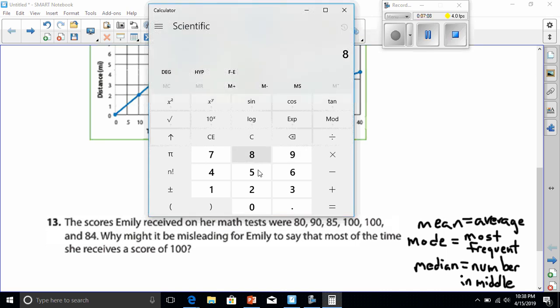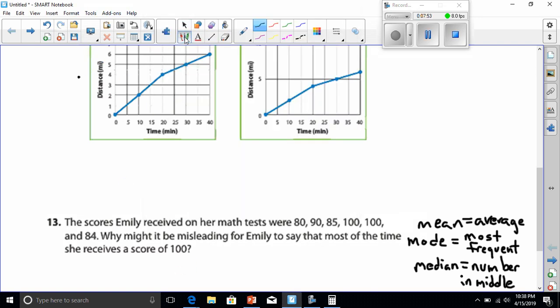Okay, 80 plus 90 plus 85 plus 100 plus 100 plus 84 is 539. Now, we're going to divide that by 6. That's 89.83. So according to the mean, the average is 89.83 repeating. We could round that up very easily to 90 if we wanted to for a whole number. So the mean equals about 90.